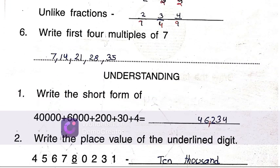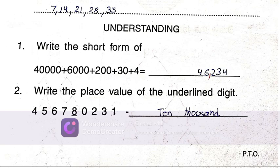Write first four multiples of 7: 7, 14, 21, 28. Add them: 7 + 14 + 21 + 28 = 70. Then place value of 8 here is 10,000.